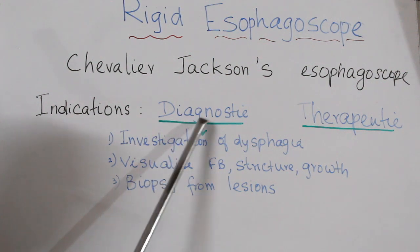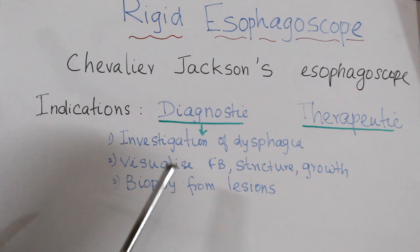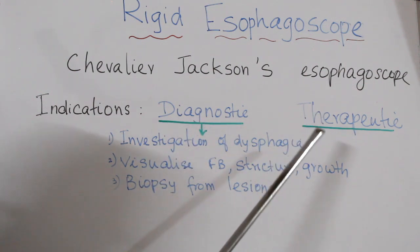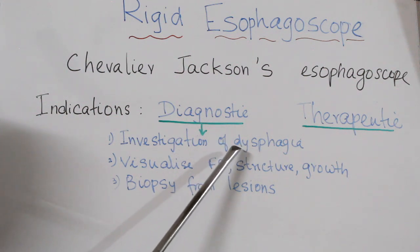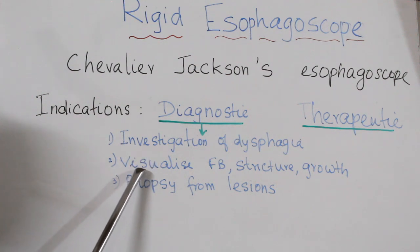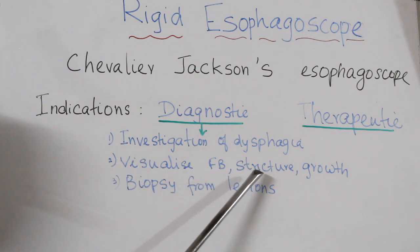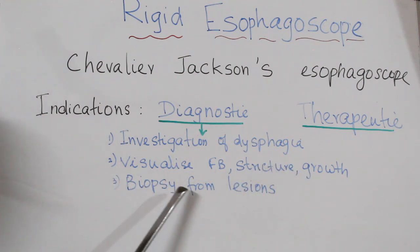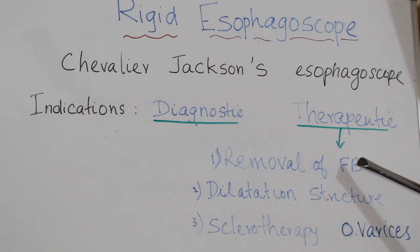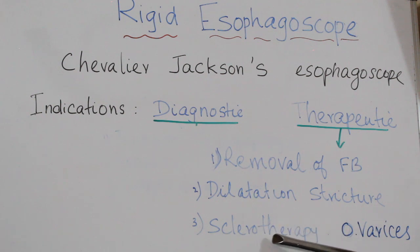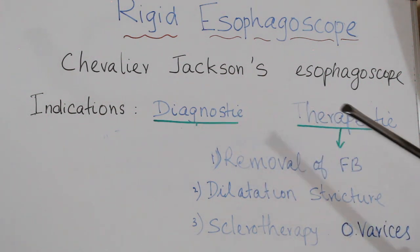Indications are both diagnostic and therapeutic. Diagnostic indications include investigation of dysphagia, visualization of foreign bodies, esophageal strictures, and growths, as well as taking a biopsy from any esophageal lesion. Therapeutic indications include removal of foreign bodies, dilatation of esophageal strictures, passing bougies, and sclerotherapy of esophageal varices.